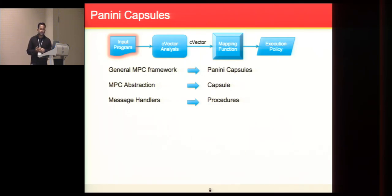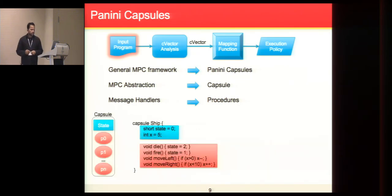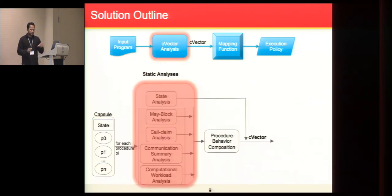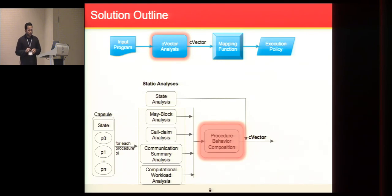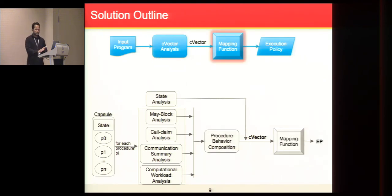To explain the solution better, I'd like to introduce an MPC framework called Panini capsules. In this, the concurrent entities are called capsules, and the capsules communicate via message passing, and the message handlers are equivalent to procedures in Panini capsules. Capsules may contain a set of states and set of procedures. Here, the code snippet is showing a capsule ship that contains two local states and four different procedures. If ship receives messages, then one of these procedures will be executed. Given that capsules contain state and procedures, we perform a number of static analyses on each of these capsule procedures to determine their behaviors. Then we combine these behaviors of the capsule procedures to form behaviors for the capsule, and then we supply those behaviors to a mapping function to get the execution policy.